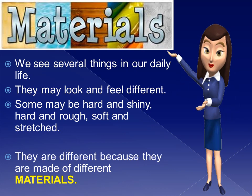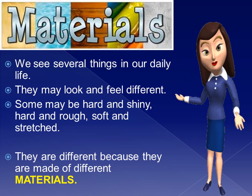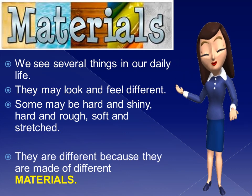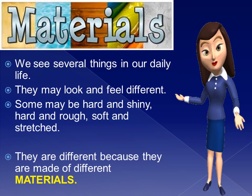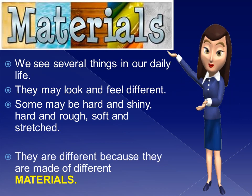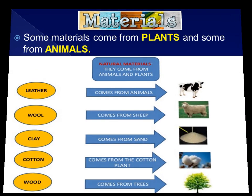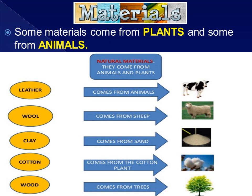Wood, metal, rubber, plastic, glass, and paper are some materials used to make different things. We get many of these materials from nature. Some materials can be obtained from plants and some from animals, and also some are dug out from the earth.